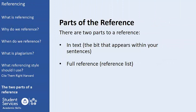Every time we reference a piece of evidence in our work, we must remember that there are two parts to every reference. There is the part that goes within the sentences we write — we will call this the in-text citation — and there is the full reference which goes in the reference list. Part two of this reference and guidance video will cover the in-text citation. Part three of this reference and guidance video will cover the reference list.